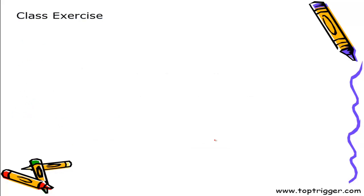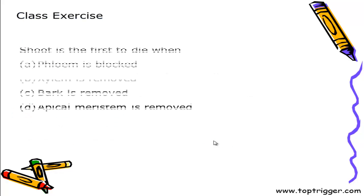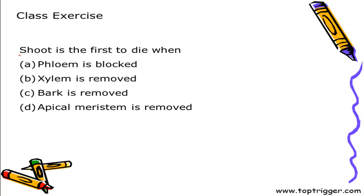Let's have a look at phloem. But before that, consider this question: the shoot is the first to die when xylem is removed — because when xylem is removed, the shoot will be deprived of water, and if water does not reach, the shoot will first droop and eventually die.